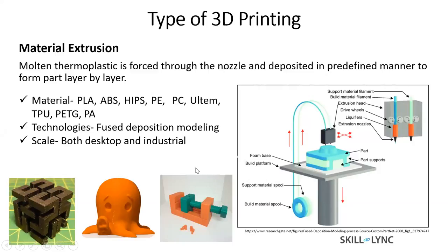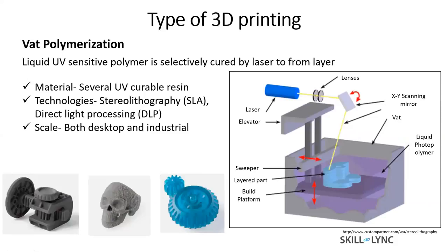The next printing process is vat polymerization. In this process, a liquid UV-sensitive polymer is selectively cured by a laser to form a layer. You have a build chamber with a liquid photopolymer and a laser. Since you cannot just move the whole laser system, you have an X-Y scanning mirror — also called galvanometer mirrors — to direct the laser pointer in the X-Y plane. The mirrors move on their X and Y axes to direct the laser.